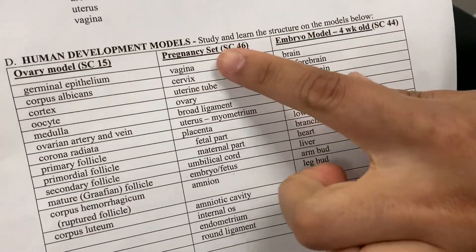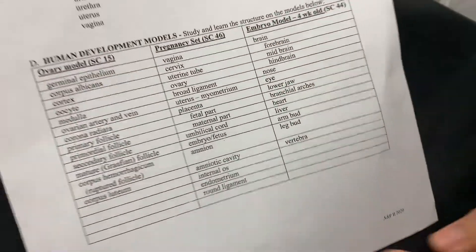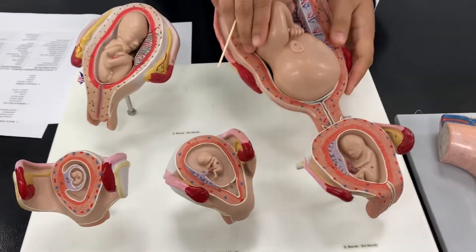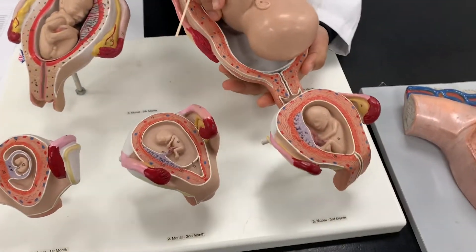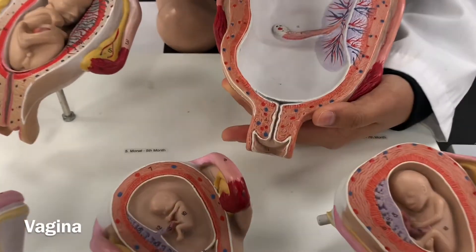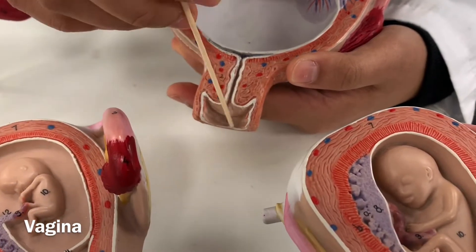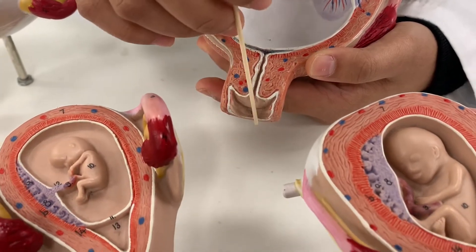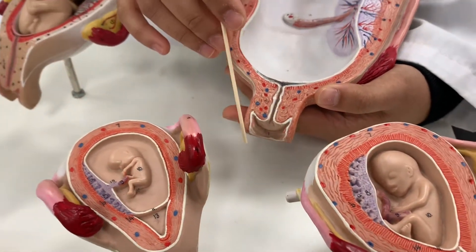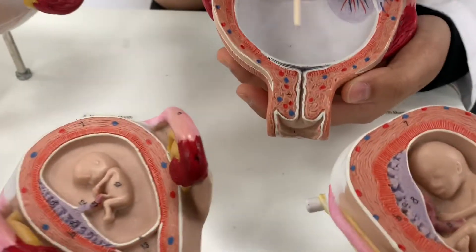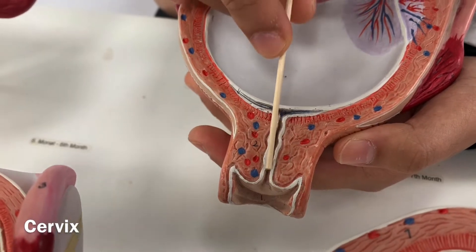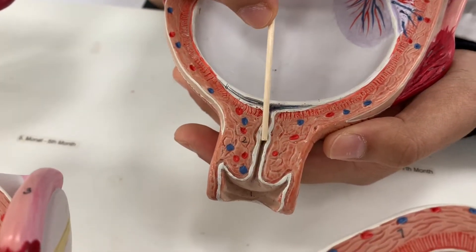That covers the ovary model. Next we're going to do the pregnancy set. We have the vagina right here — this opening would be your vagina. Then we have the cervix, which is right here.